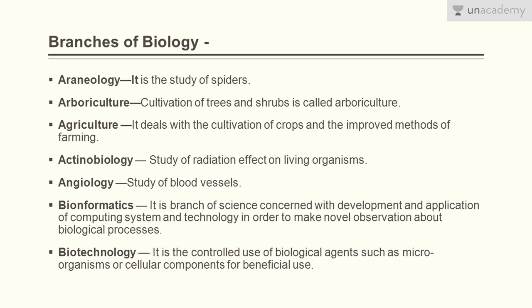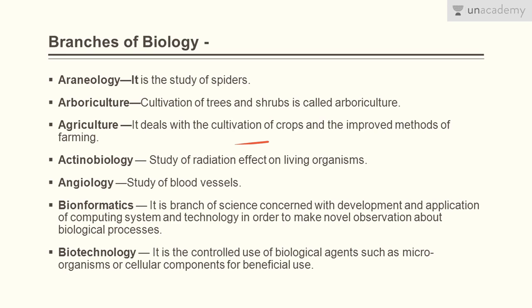Arboriculture is the cultivation of trees and shrubs. Agriculture deals with the cultivation of crops and improved methods of farming — so there's a difference: arboriculture is for trees and shrubs, while agriculture is related completely with farming. Actinobiology is the study of radiation effects on living organisms. Angiology is the study of blood vessels.